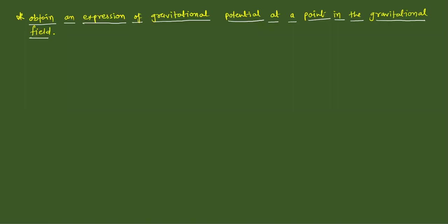New question: obtain an expression of gravitational potential at a point in the gravitational field, which is denoted by V, and the potential energy, which is denoted by U. We have to derive the relation — potential energy और potential के बीच का relation derive करेंगे।